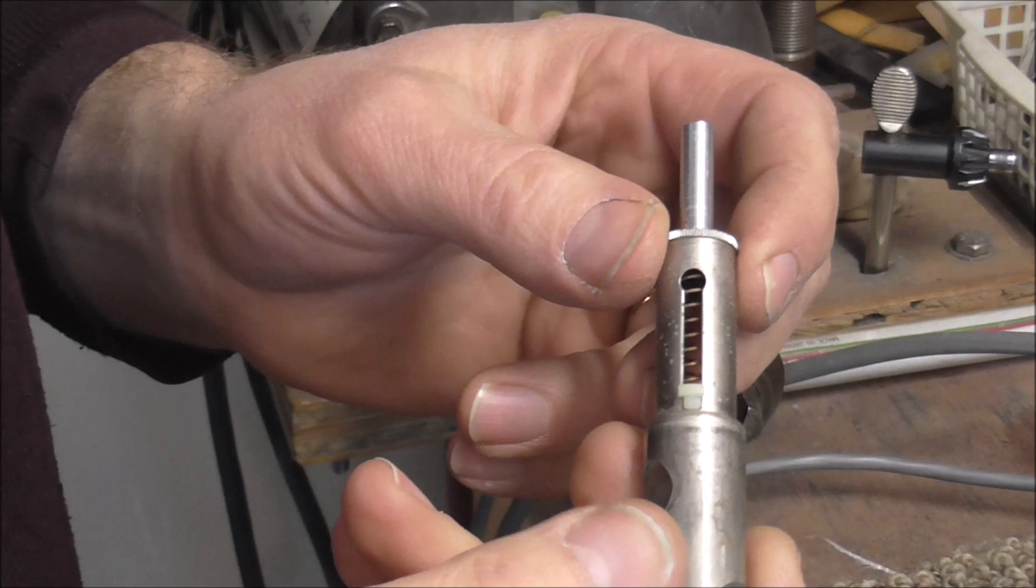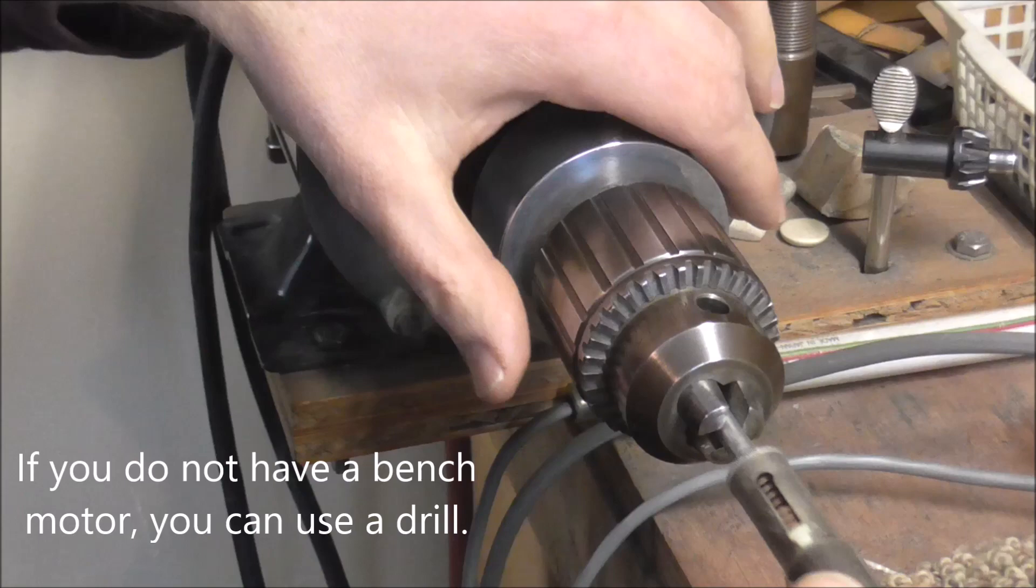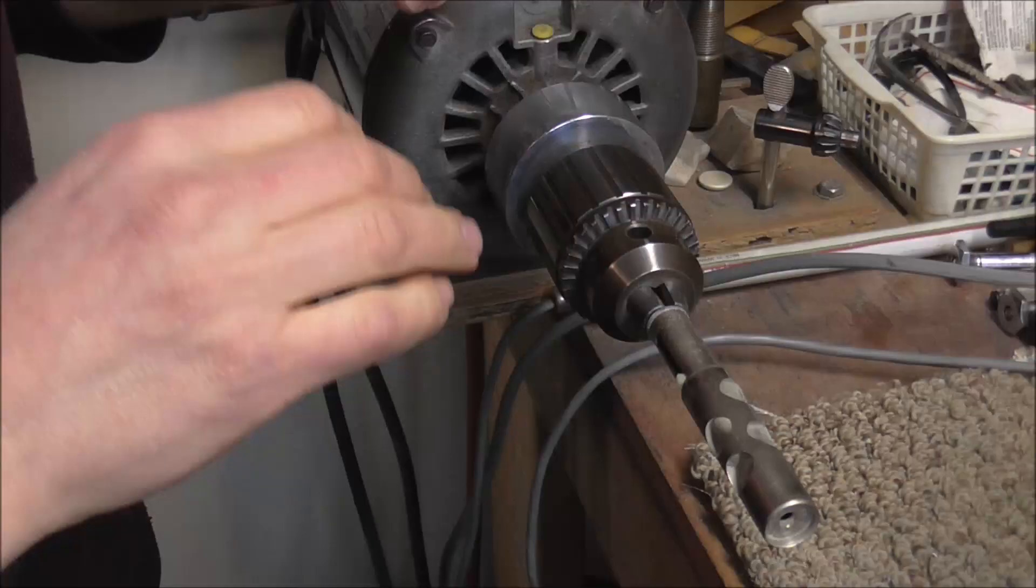There are several different ways to remove a valve stem that is stuck. The first one you should try and the easiest is to use the bench motor. Put the valve in the bench motor and tighten that up, not too tight but tight enough that it won't slip.